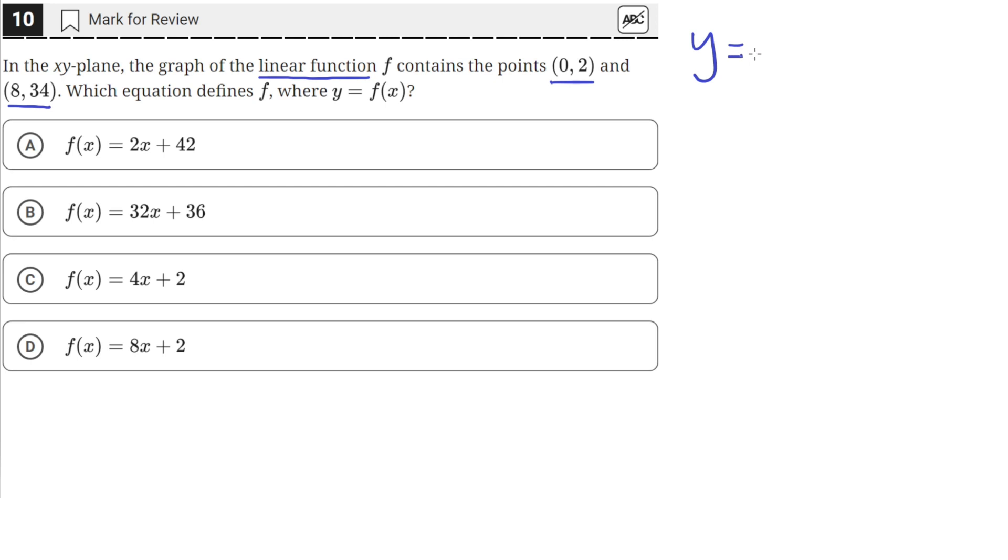A linear function has the form y equals mx plus b, where m is the slope, the rise over the run, and b is the y-intercept, the y-coordinate of the point of intersection between the line and the y-axis.